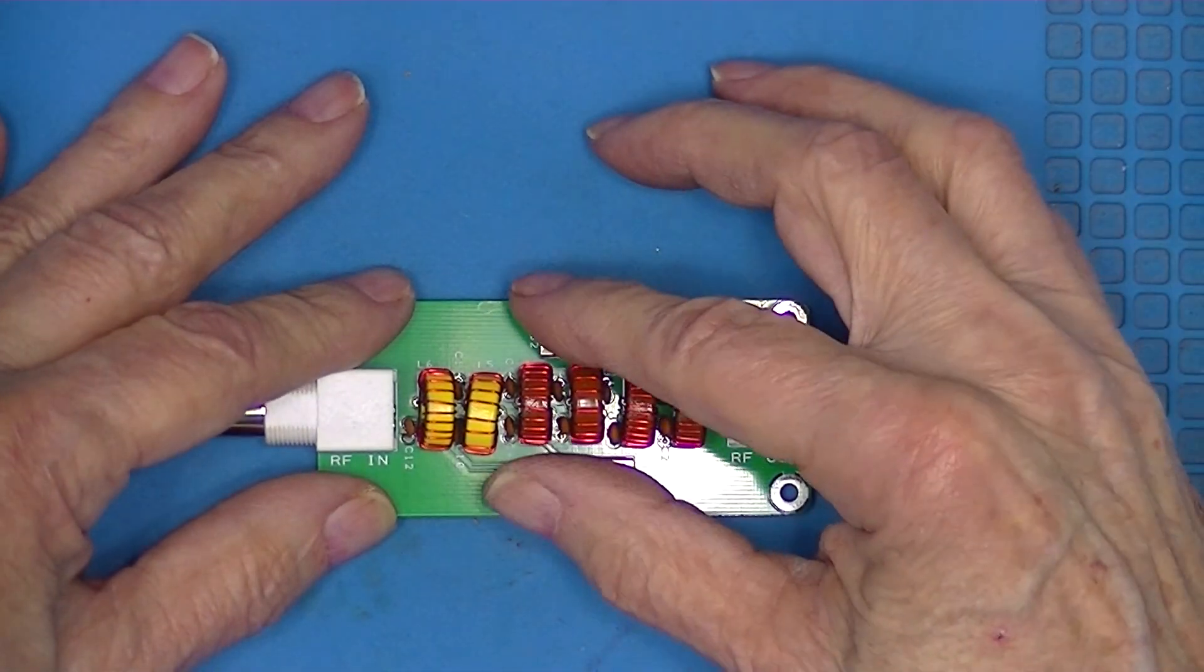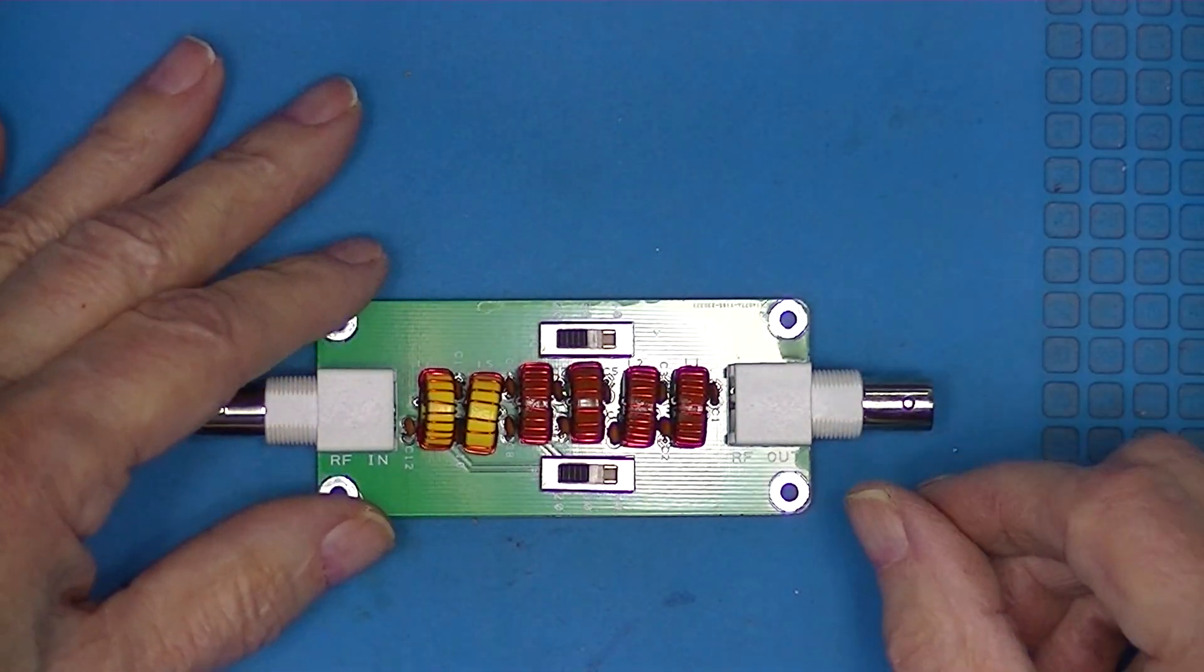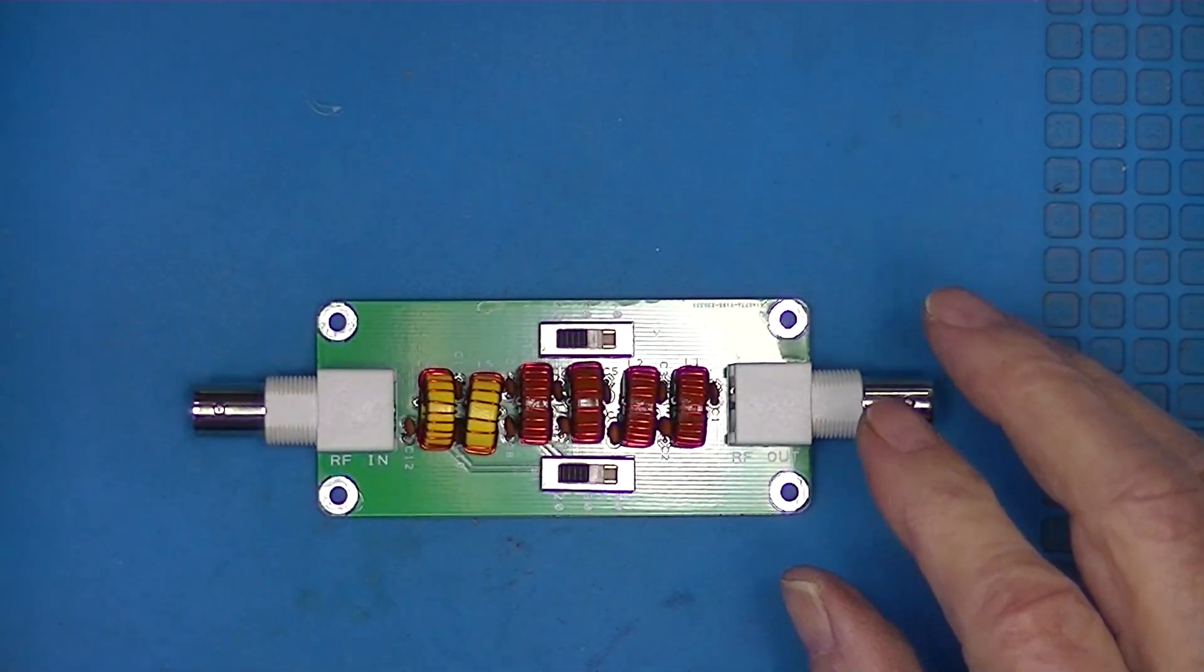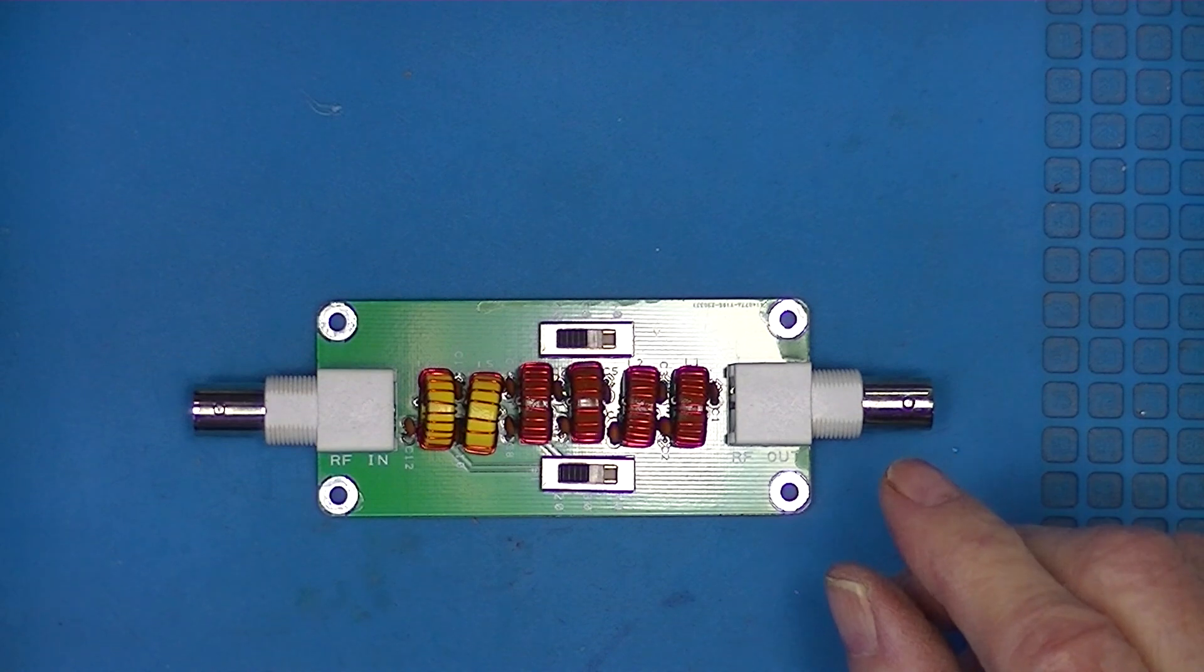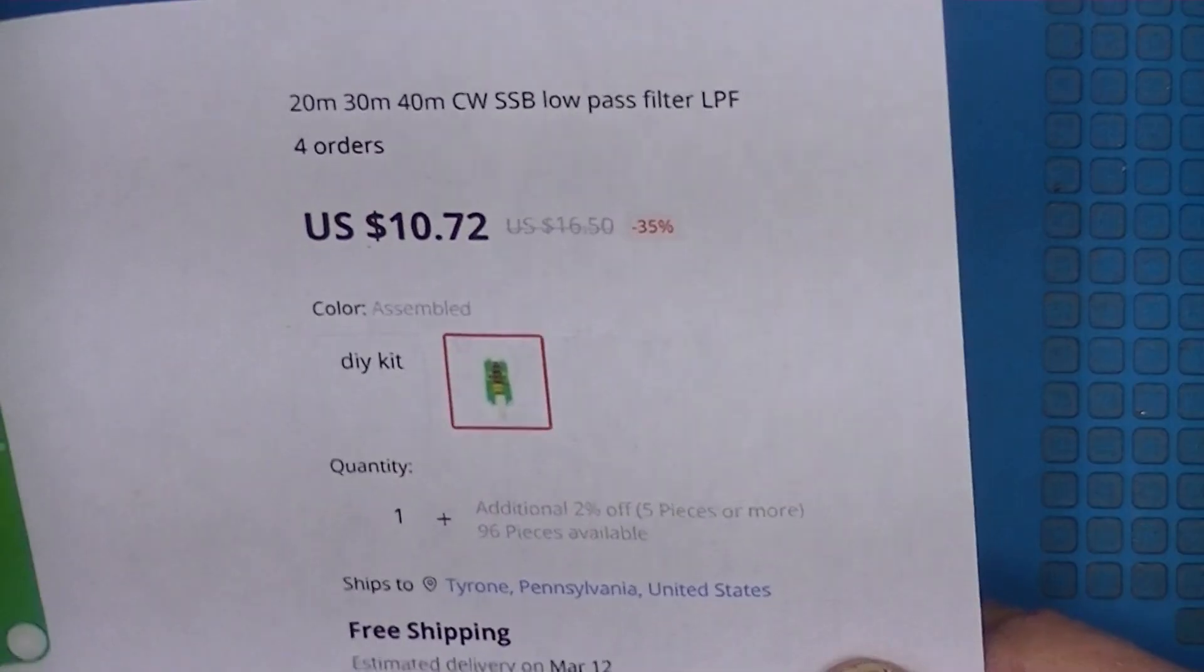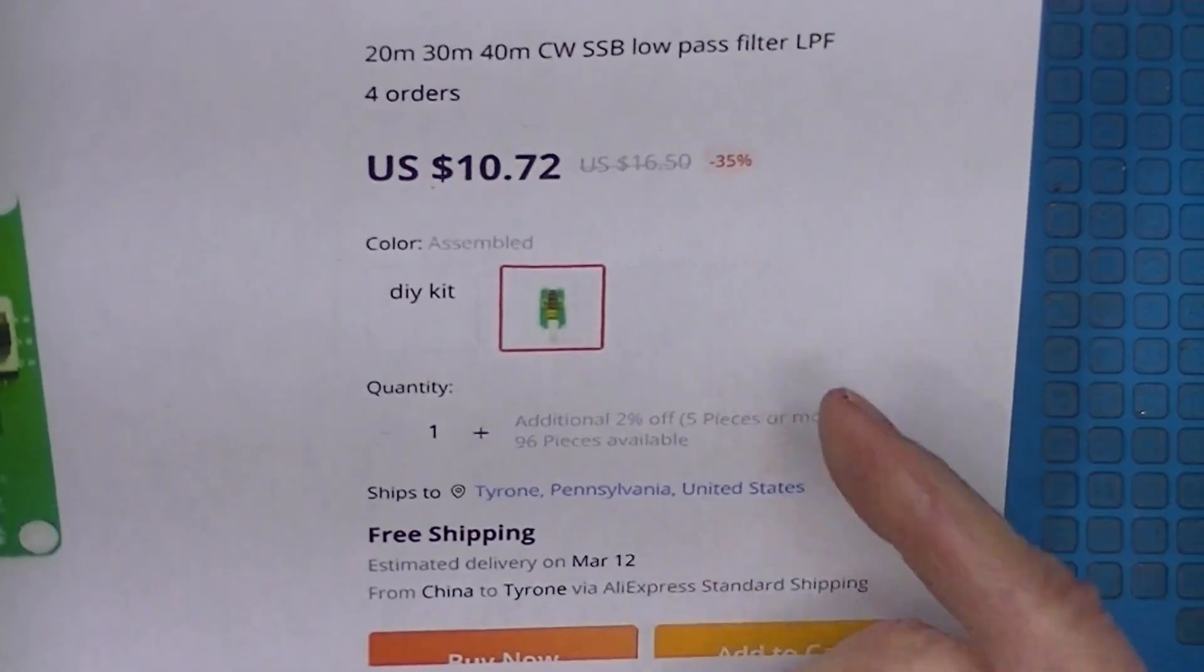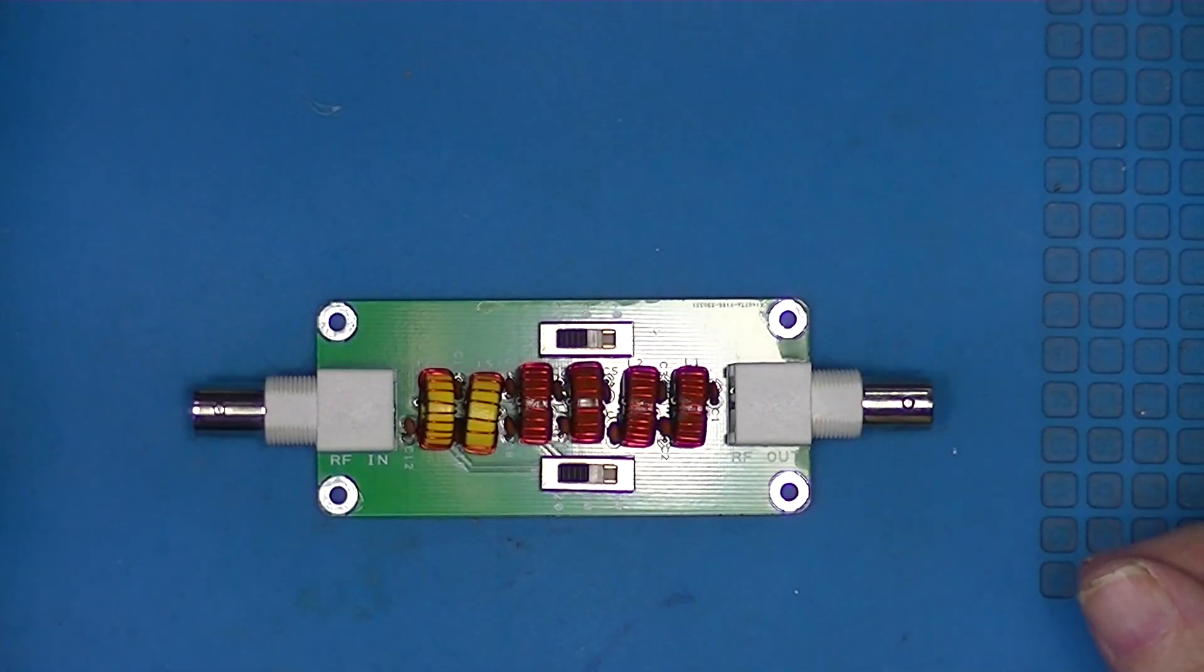As for RF in and RF out, I don't think that matters. I think it's symmetrical. This is the way it was sold on AliExpress with free shipping. We're going to take a look at my spectrum analyzer.